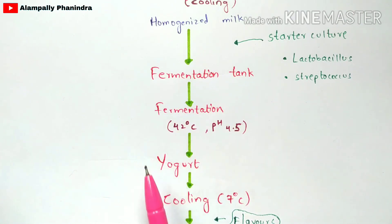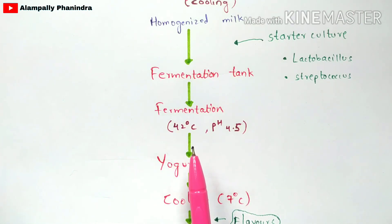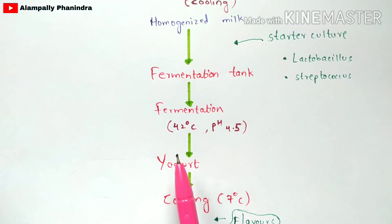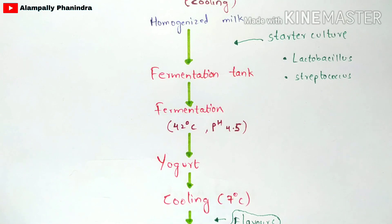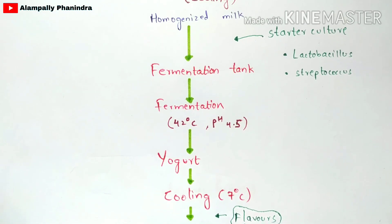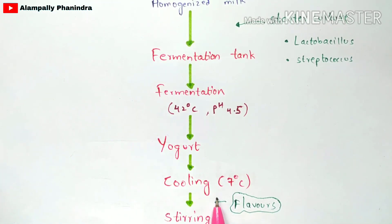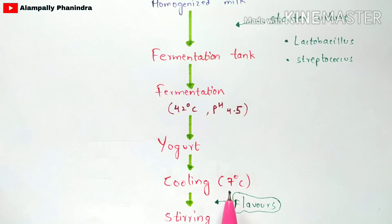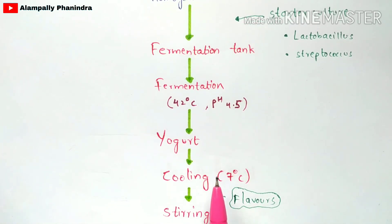The yogurt produced in the fermentation tank is collected by opening the outlet tap of the tank. The collected yogurt is then cooled to 7 degrees Celsius using refrigerators present in the industry.